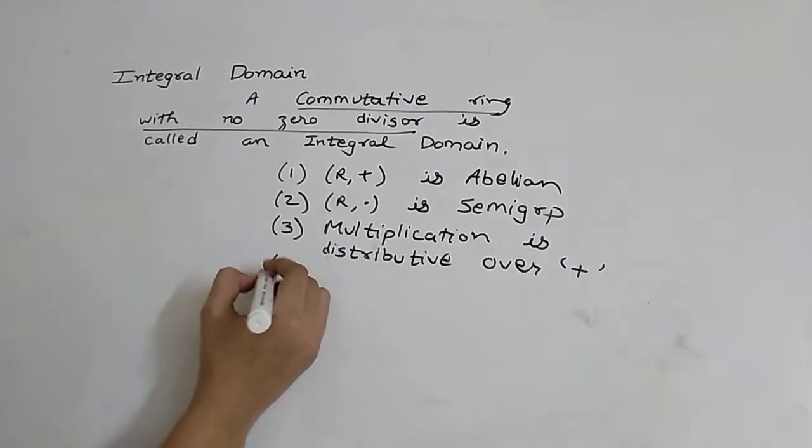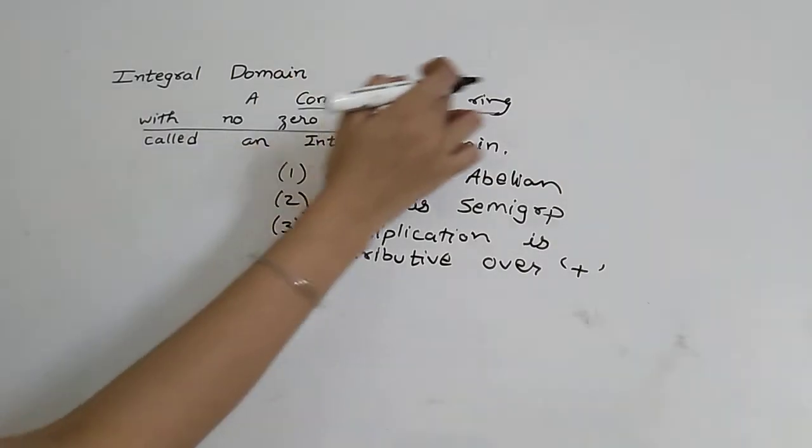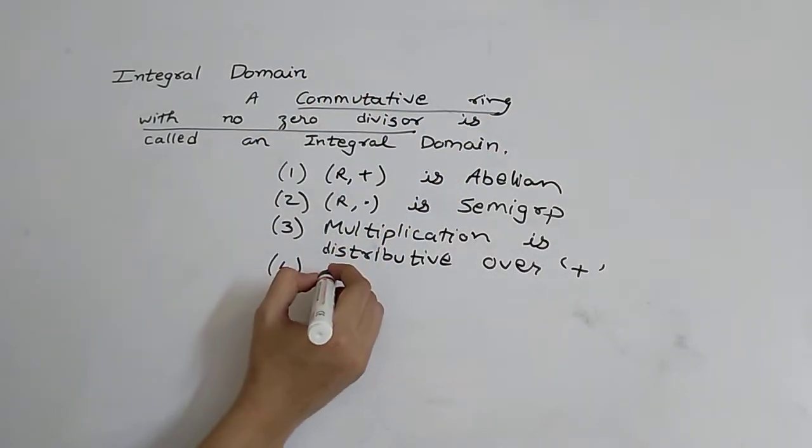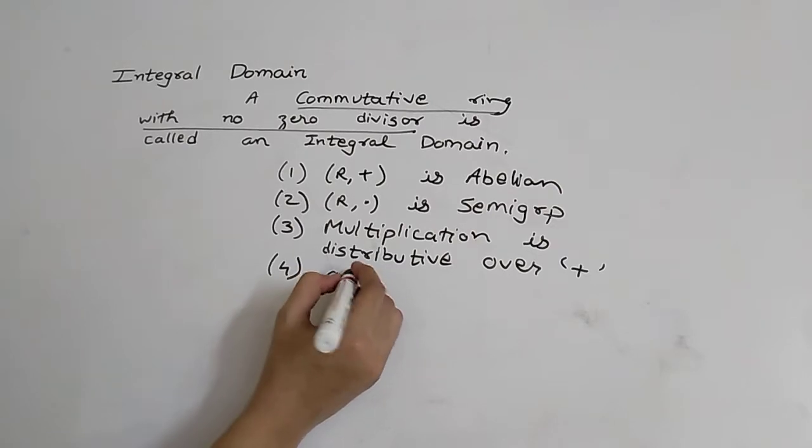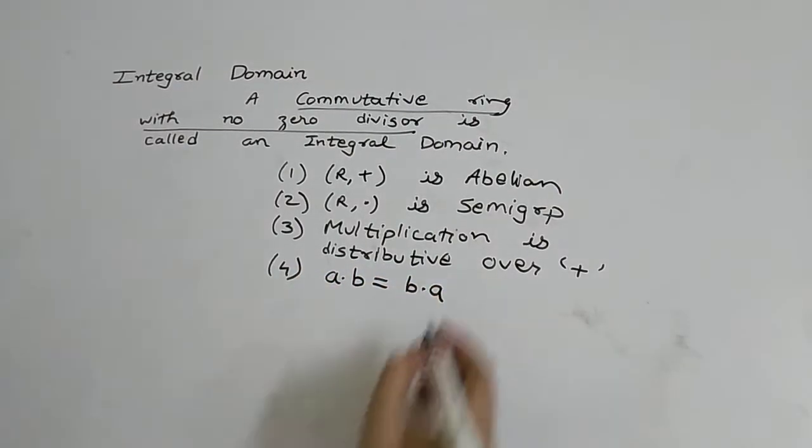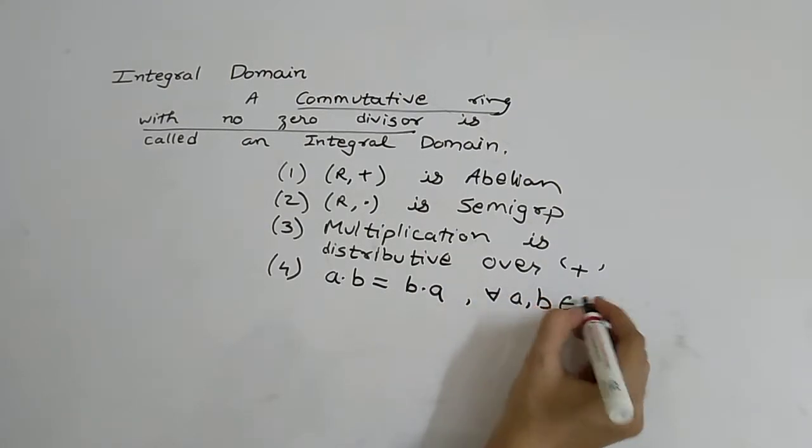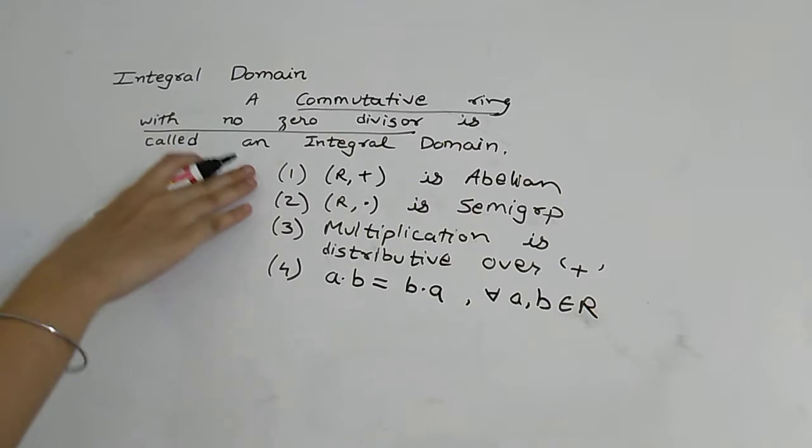And fourth, these are three properties of ring. Because here is a commutative ring, so here is a commutativity property: a into b is equal to b into a for all a, b belongs to R.